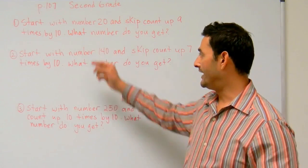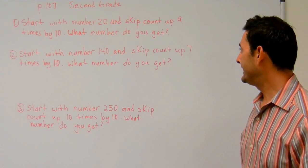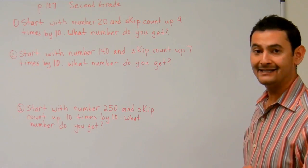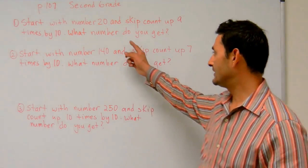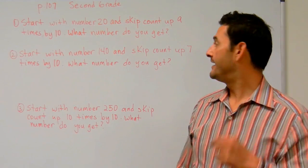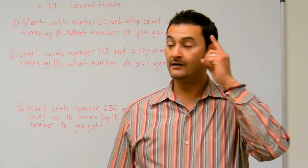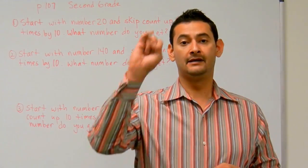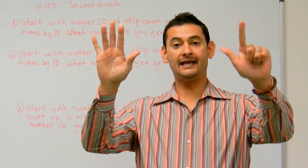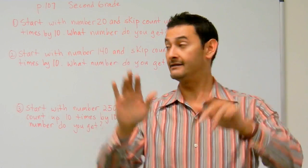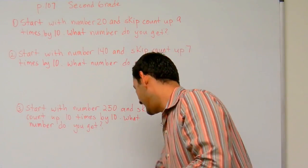So let's take a look at number one. We're going to start with number 20 and skip count up nine times by ten. What number do you get? Okay, so let's go ahead and get started. We're going to put 20 in our head, and we're going to skip count up nine times by ten. Ready? So we have 20, 30, 40, 50, 60, 70, 80, 90, 100, 110, okay? So this one's going to be 110.